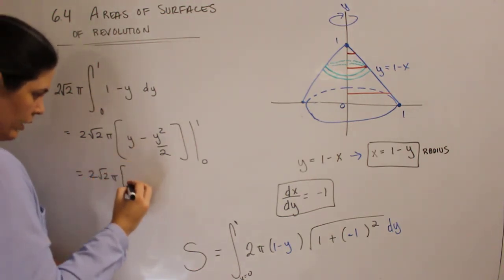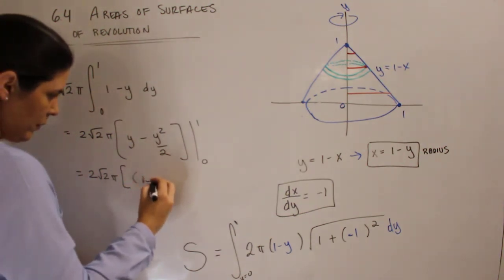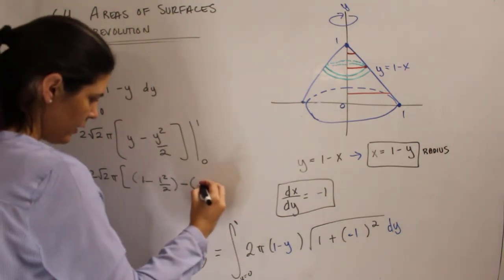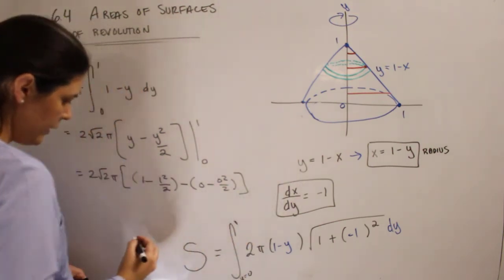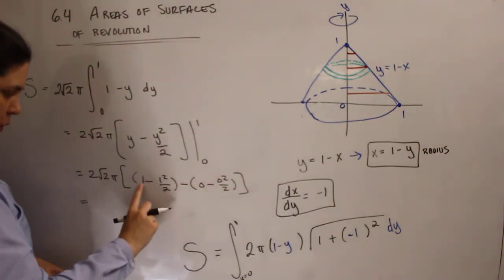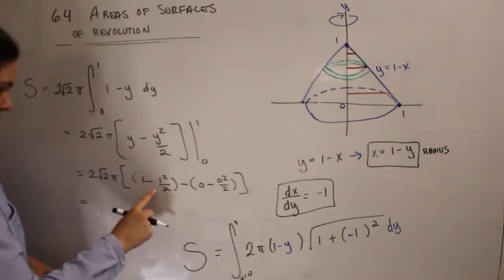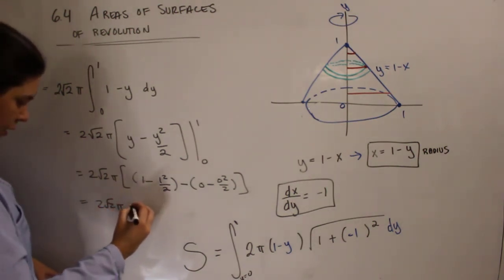And we get 1 minus, let's do this in parts. 1 minus 1 squared over 2, minus 0 minus 0 squared over 2. And then this becomes 0. This is 1 minus 1 half. So this is just going to be 1 half. So this is 2 square root 2 pi times 1 half.